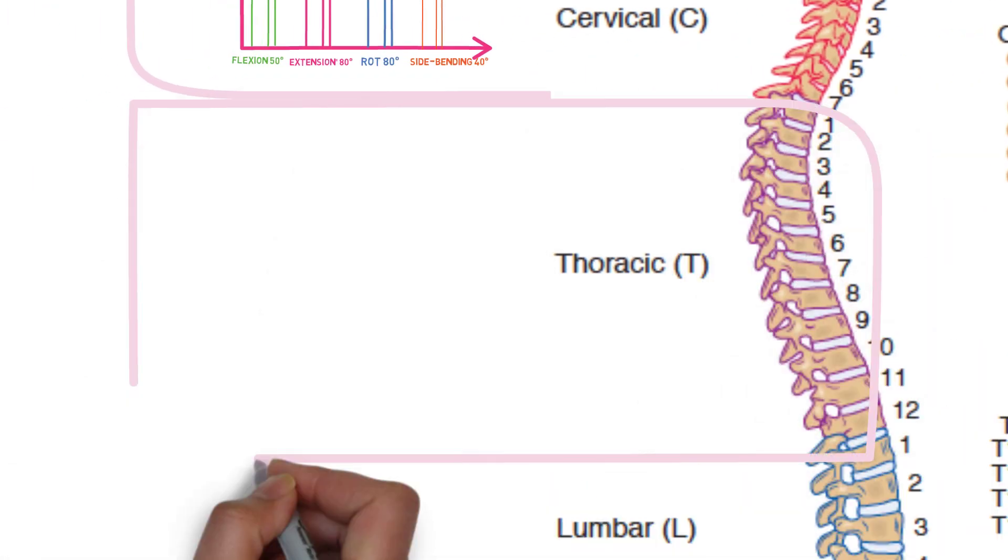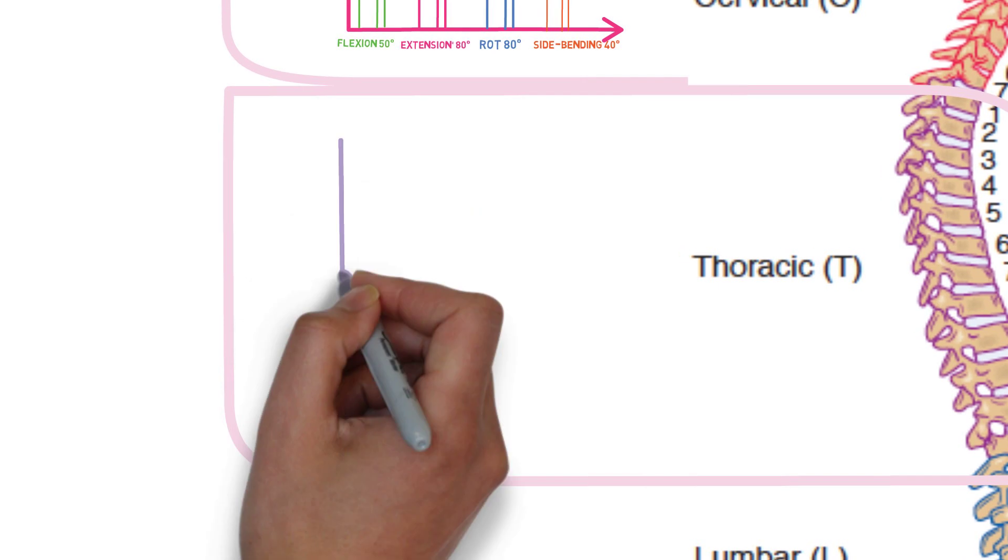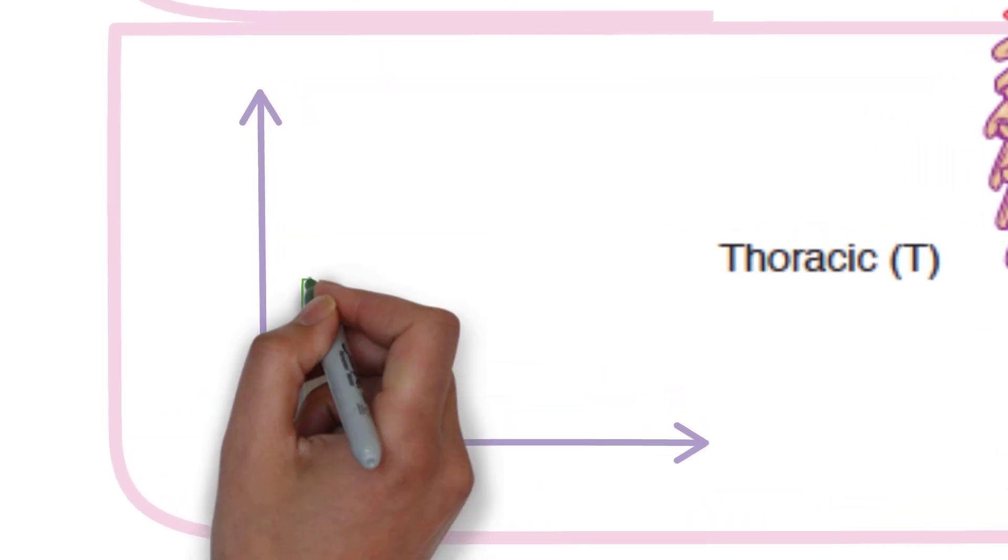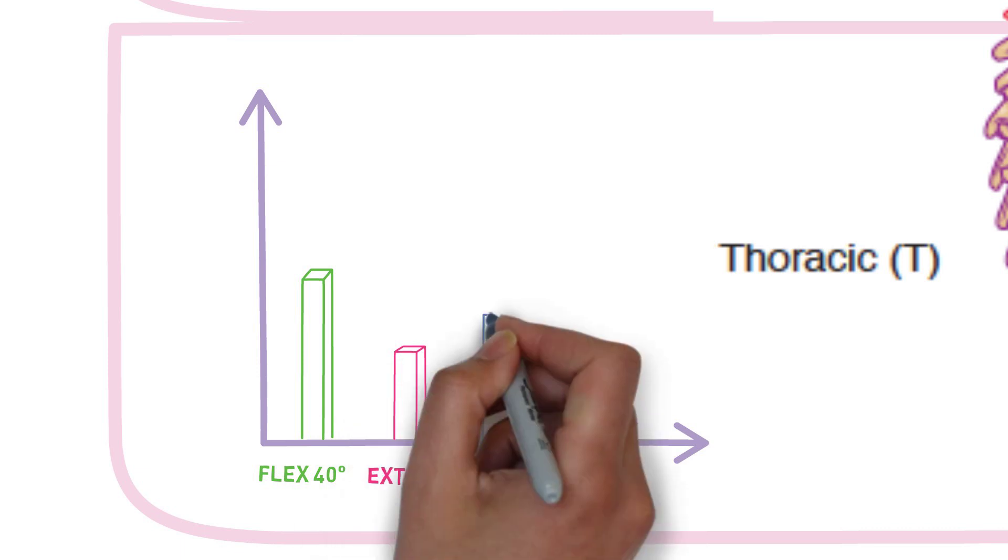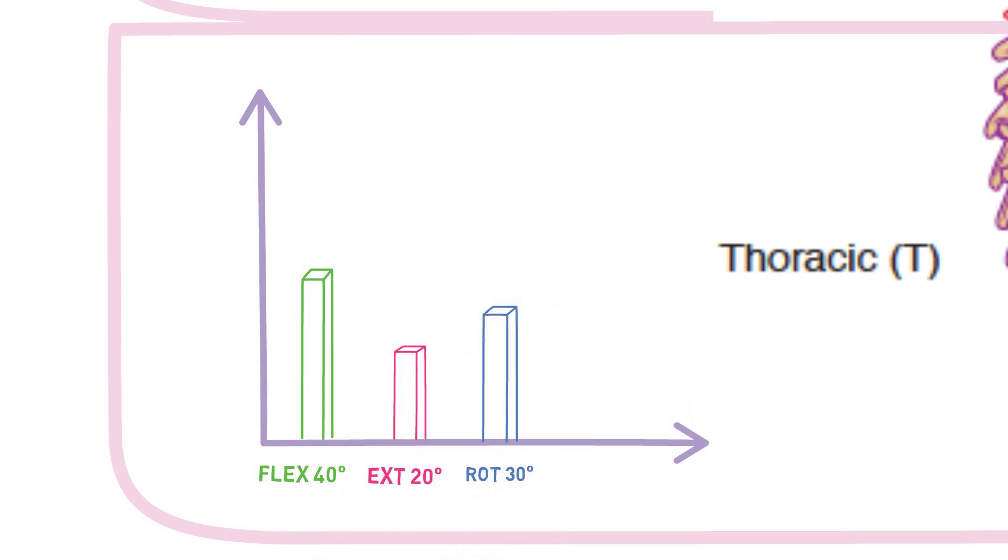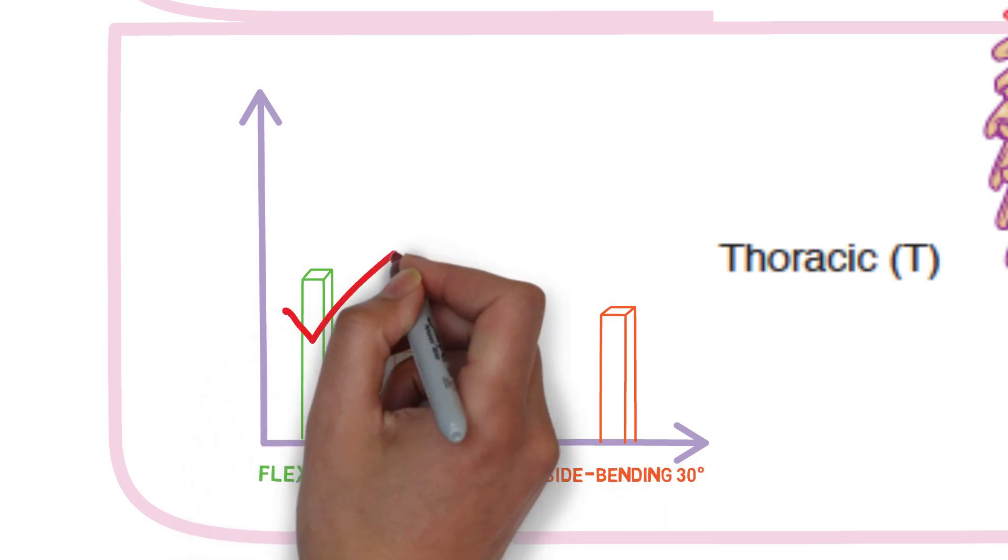Now, let's take a look at the thoracic range of motion. There is about 40 degrees of flexion and 20 degrees of extension available at the thoracic region. There is about 30 degrees of total rotation and about 30 degrees of side bending range of motion. So, thoracic flexion range of motion certainly predominates this region.